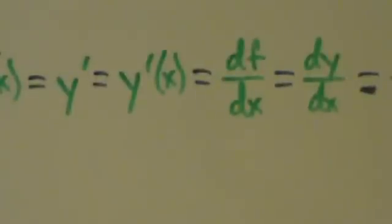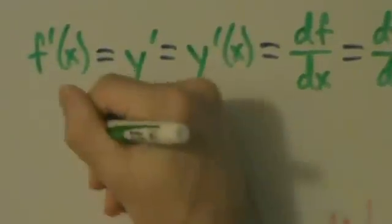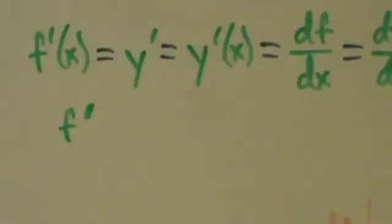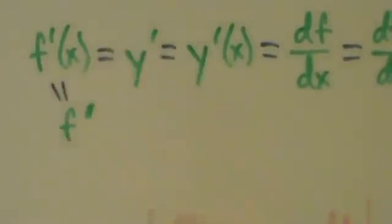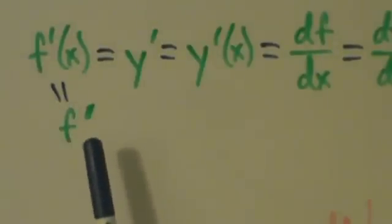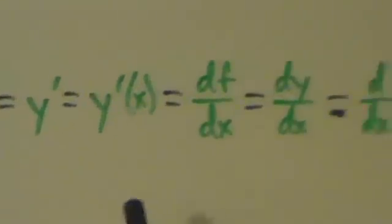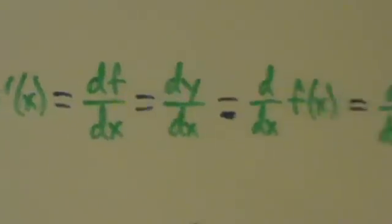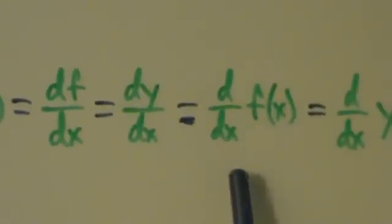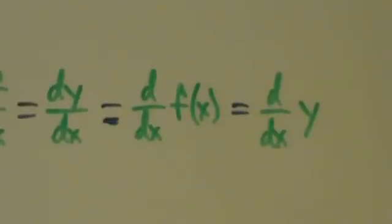It looks like I forgot to write one here. But you could also just say f primed, not f primed of x — that's all the same thing. So to summarize: f primed of x, f primed, y primed, y primed of x, df dx, dy dx, d dx of f of x, and d dx of y — it's all the same thing if you're talking about the derivative as a function.